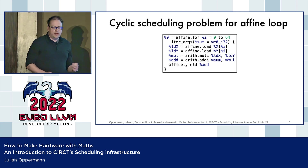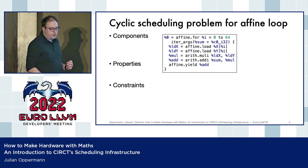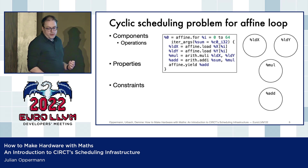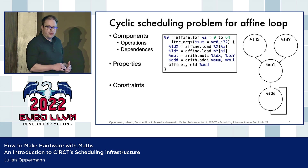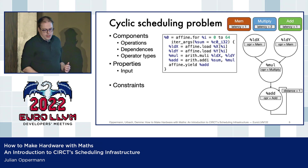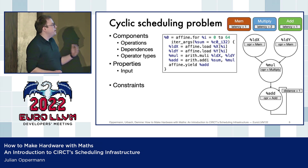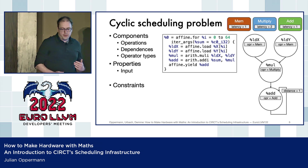Let me walk you through one example scheduling problem in our infrastructure. This is again the dot product affine loop I showed earlier, and we are talking here about components, properties, and constraints. The components are operations — just the MLIR operations — we have dependencies which represent the value flow of the computation, and operator types which represent the hardware we are going to schedule the computation to. Properties can be attached to these components; for example, operator types have a latency and we link the operations to a specific operator type.